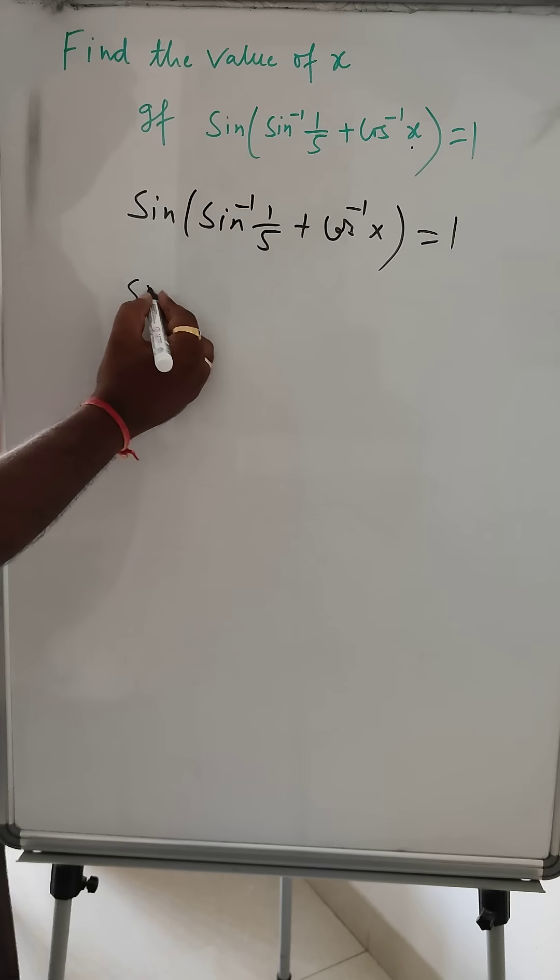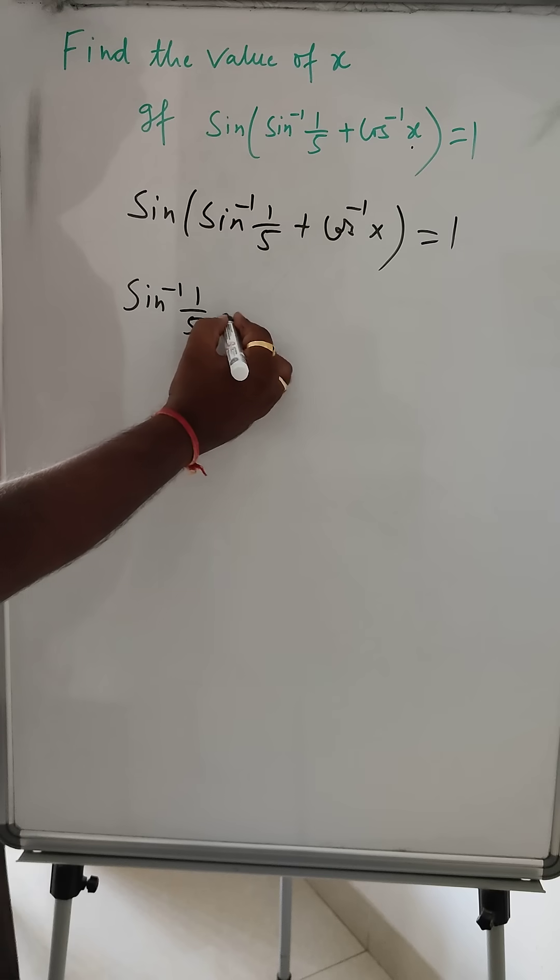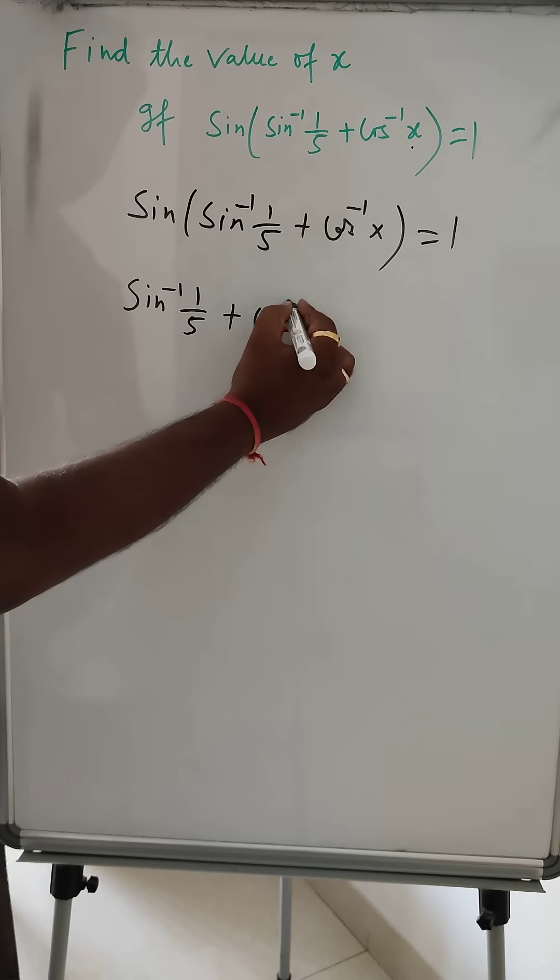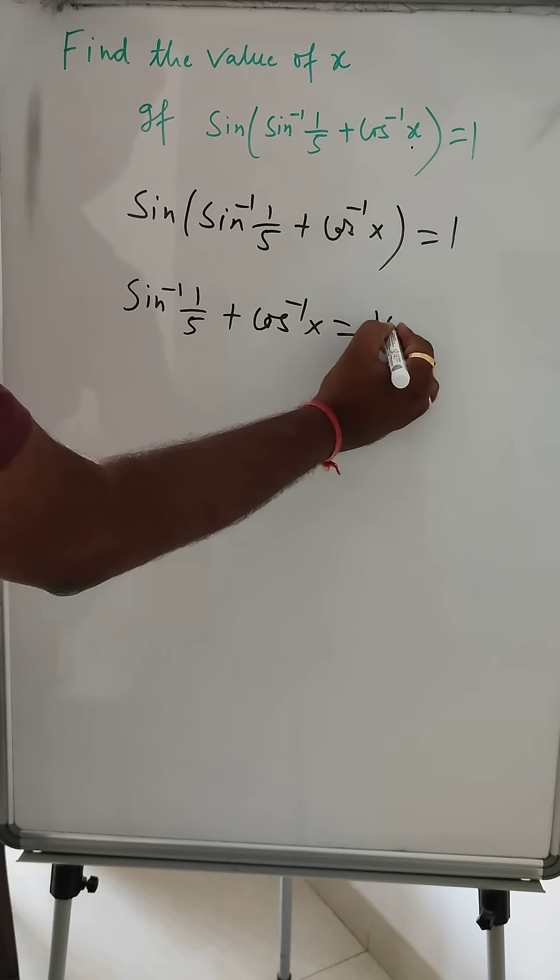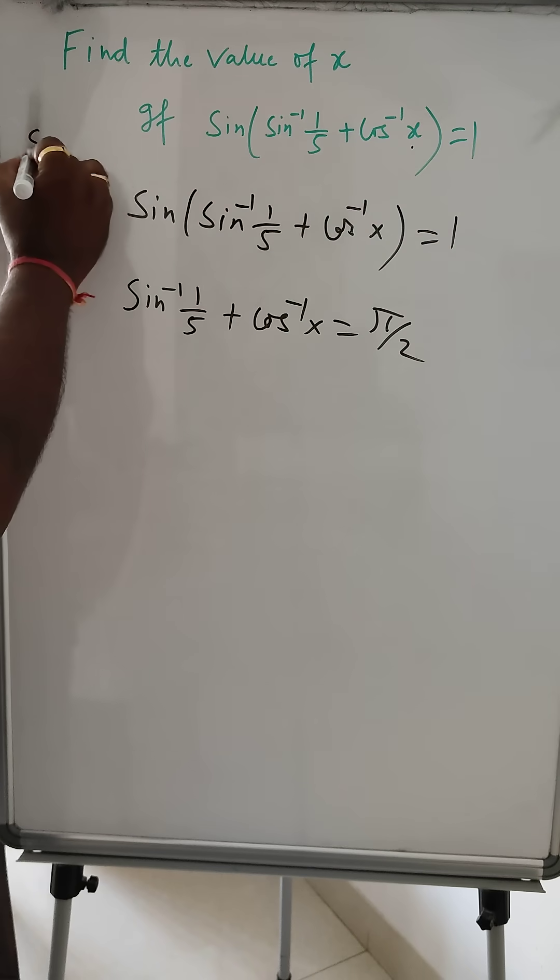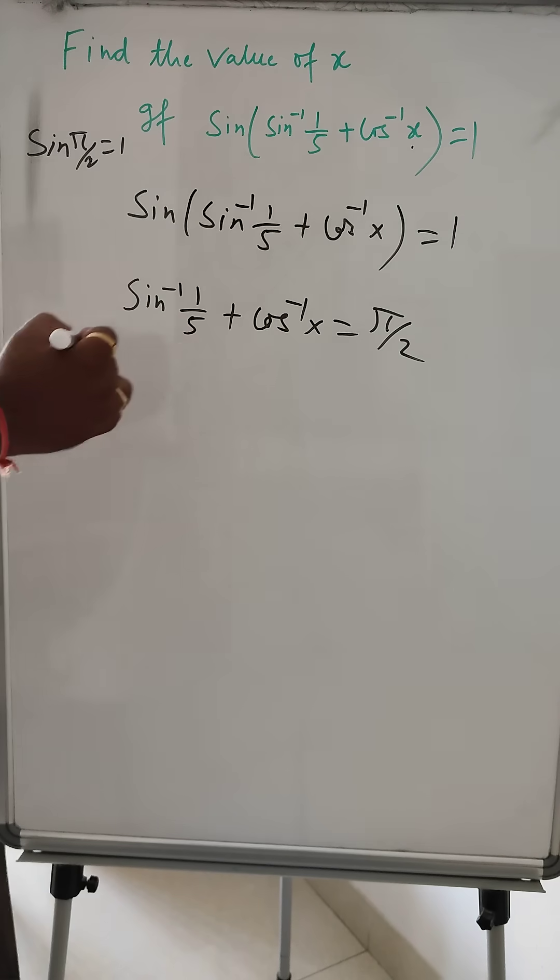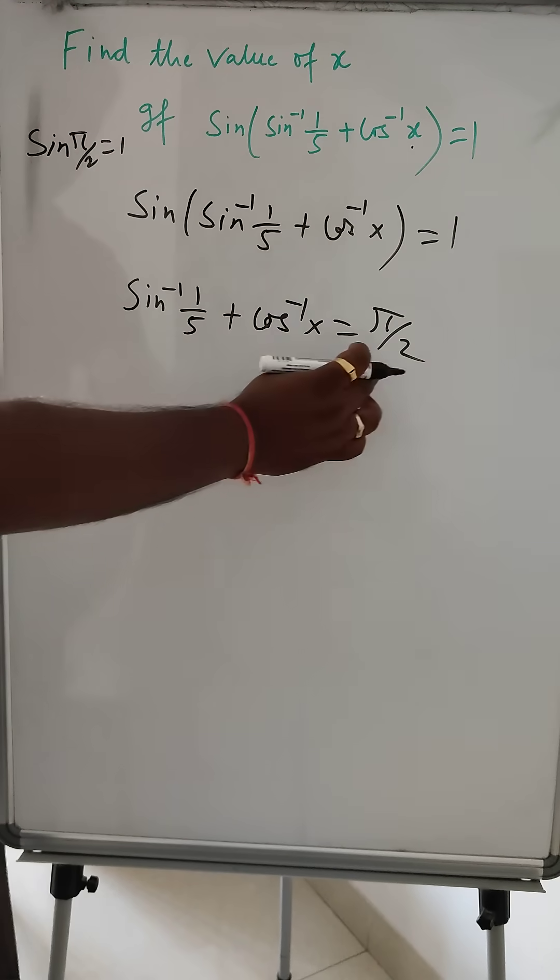So we can write sin inverse 1 by 5 plus cos inverse x is equal to π by 2. Right, we know sin π by 2 is equal to 1. Okay, then that is fine.